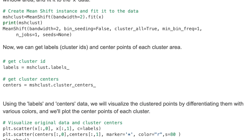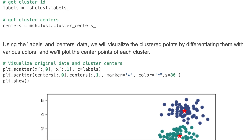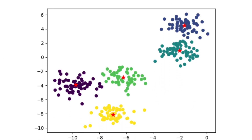Using the label and center data, we will visualize the clustered points by differentiating them with various colors, and we will plot the center points of each cluster. Here is the result — the model clustered the data into five clusters with different colors, and here we highlighted the center of each cluster.